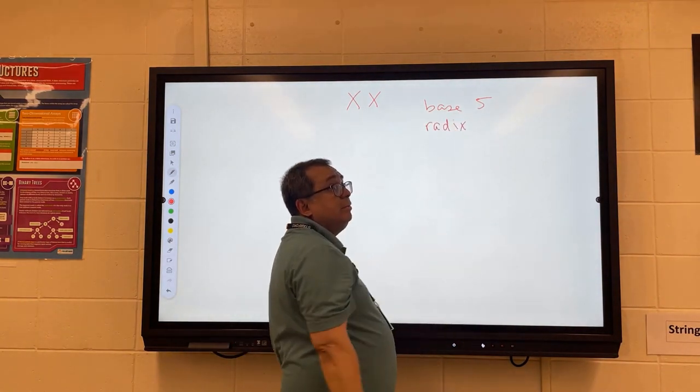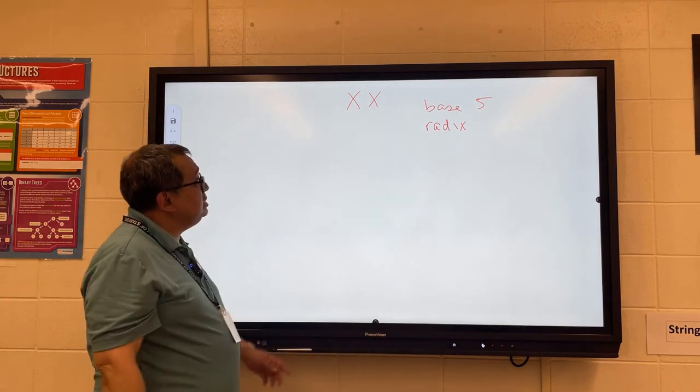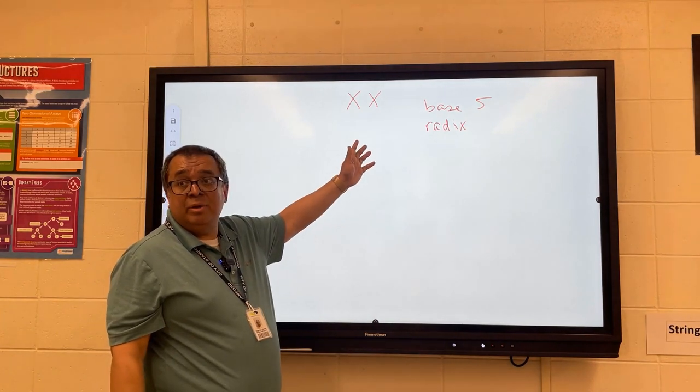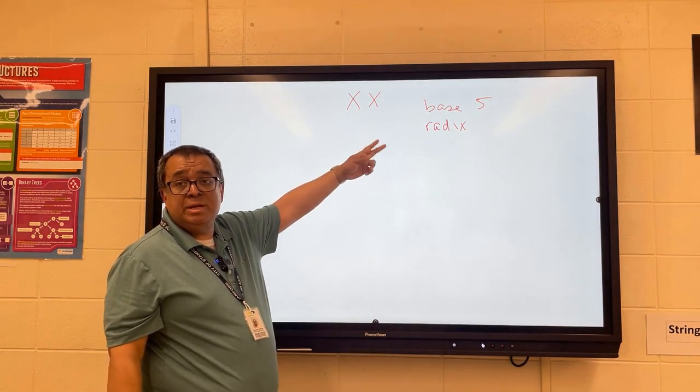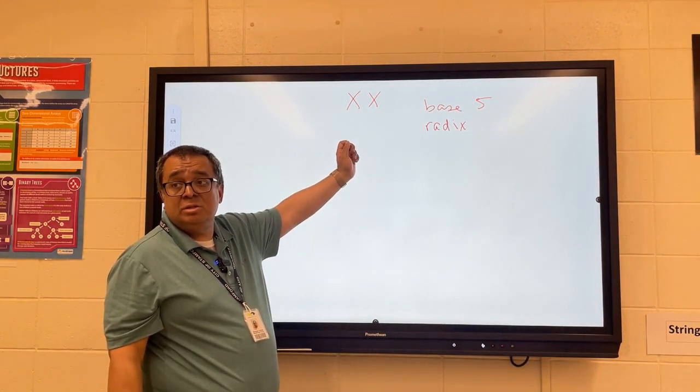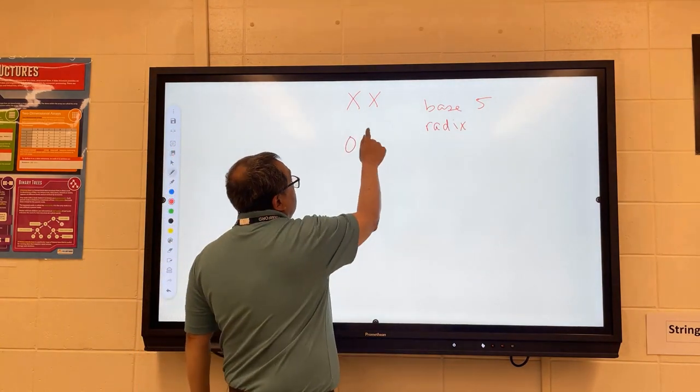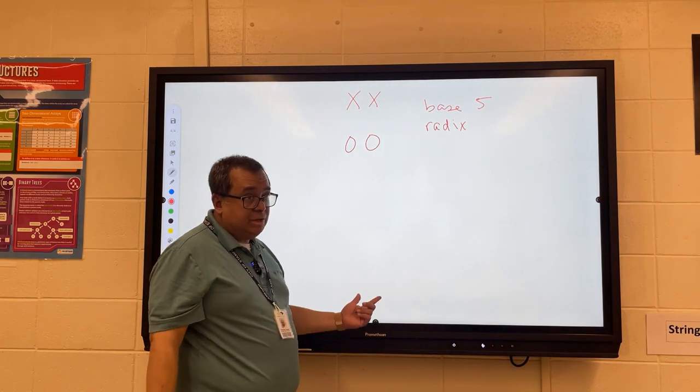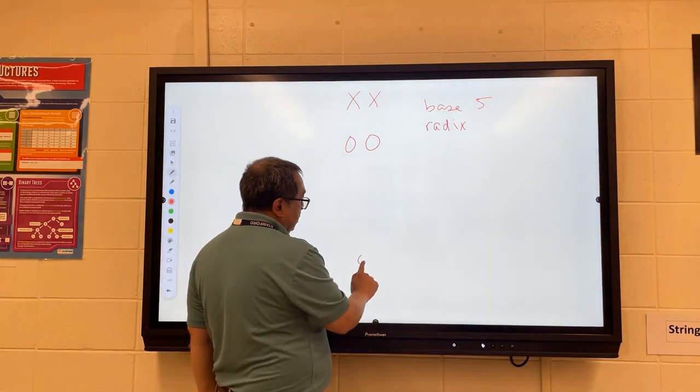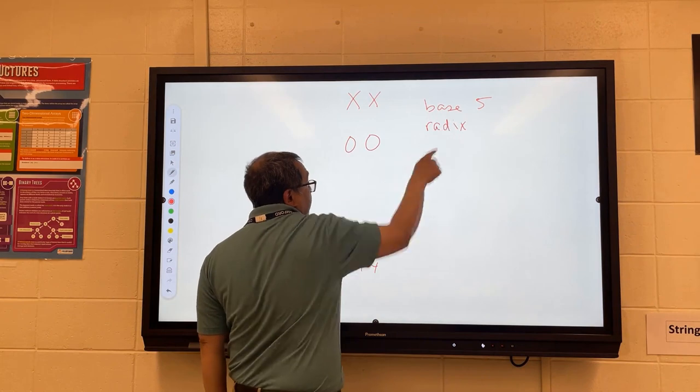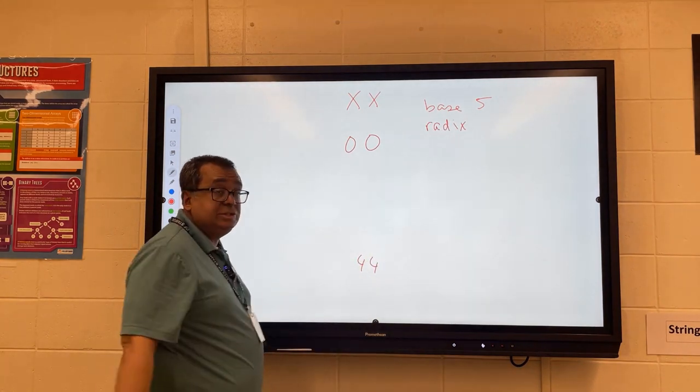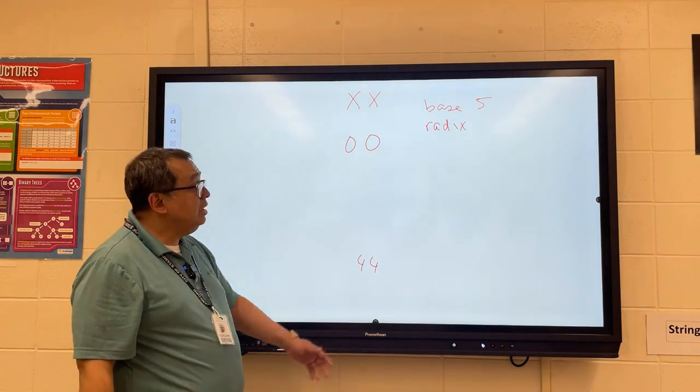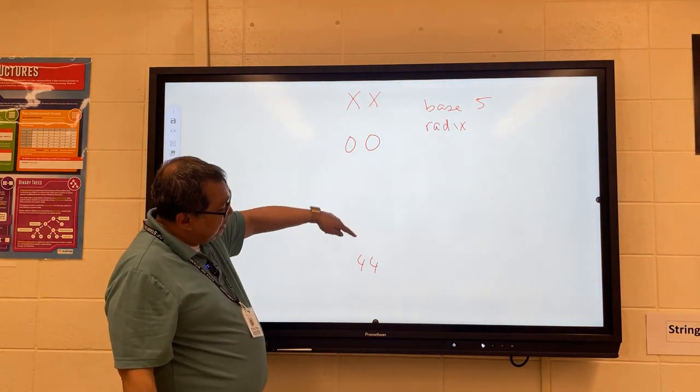So what I want you to do is I want you to count for me. What's the smallest number going to be here that we're going to have with two digits? Base 5. What's the smallest? Zero, zero. And now think carefully before you answer. What's the largest number going to be here? 44. Notice that there is no 5 in base 5, just like there is no 10 in base 10. There's 0 through 9.